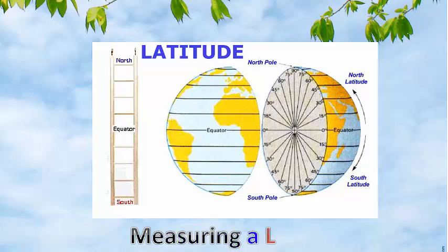A latitude is an angle which ranges from zero degrees at the equator to 90 degrees at the poles. Latitudes are imaginary lines and they run parallel to each other. They run east-west to form concentric circles.